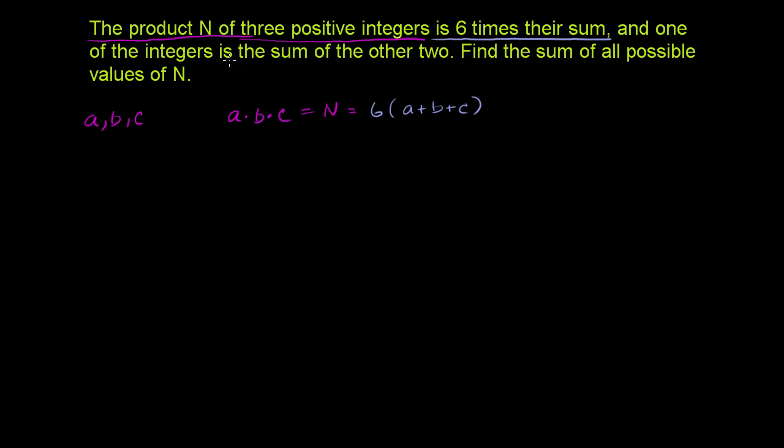And one of the integers is the sum of the other two. Well, let's just pick c to be the sum of a and b. These are just names, and we haven't said one of them is larger or less than the other one. So let's just say that a plus b is equal to c.